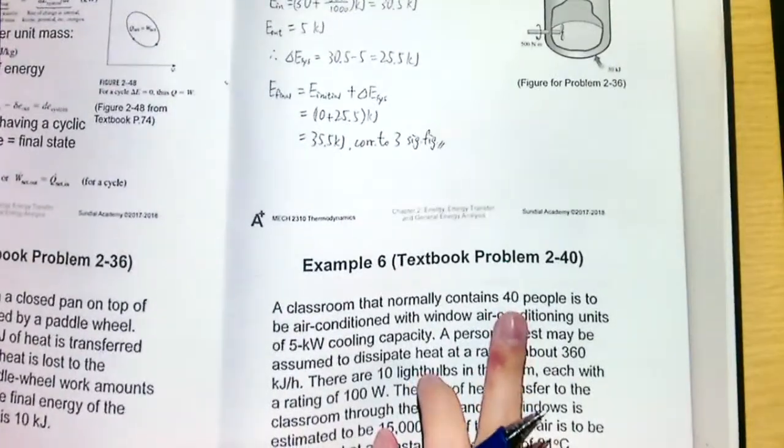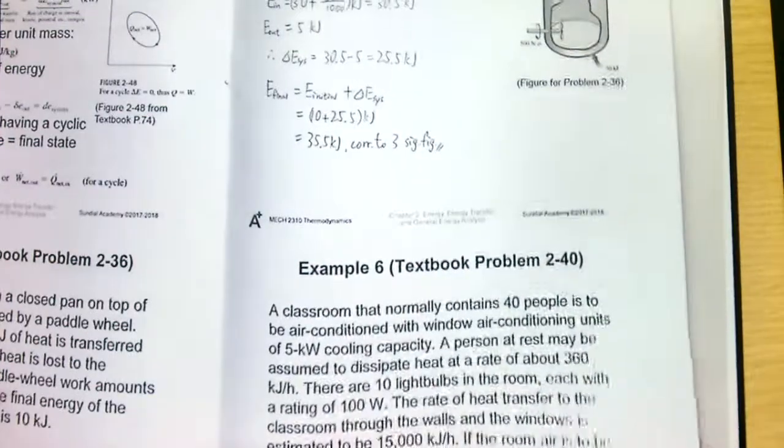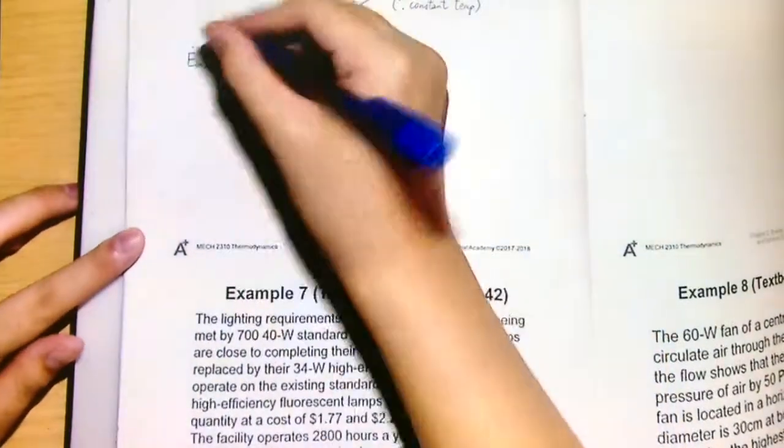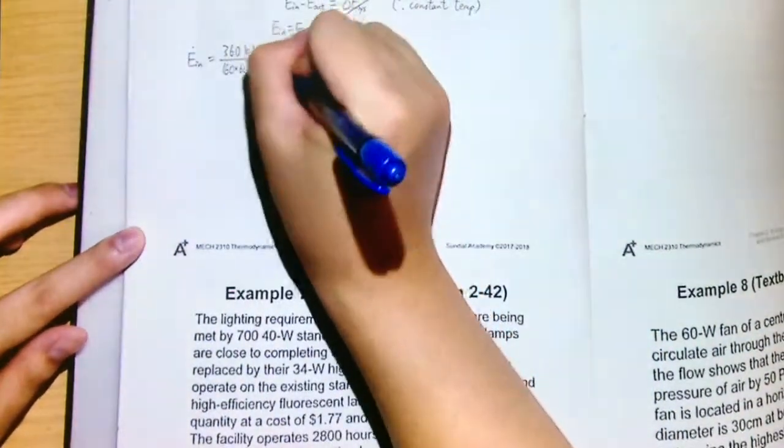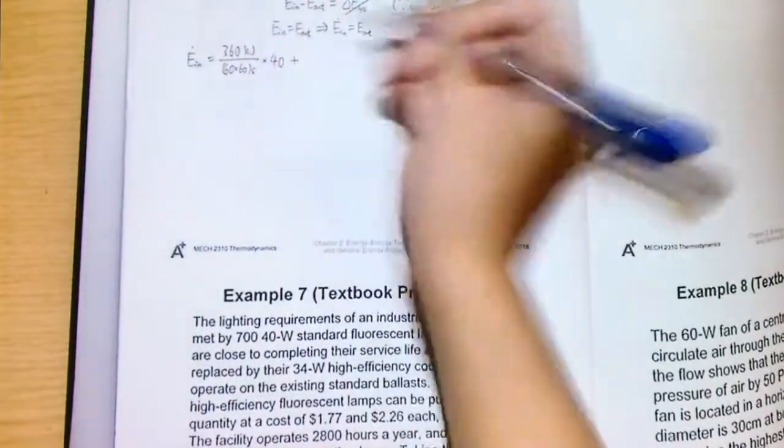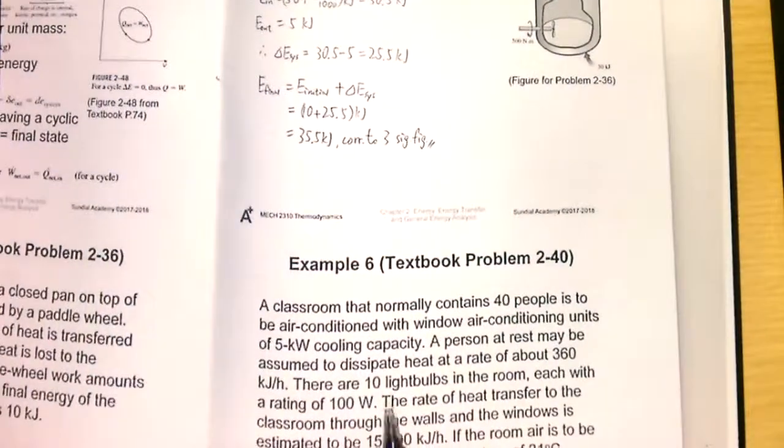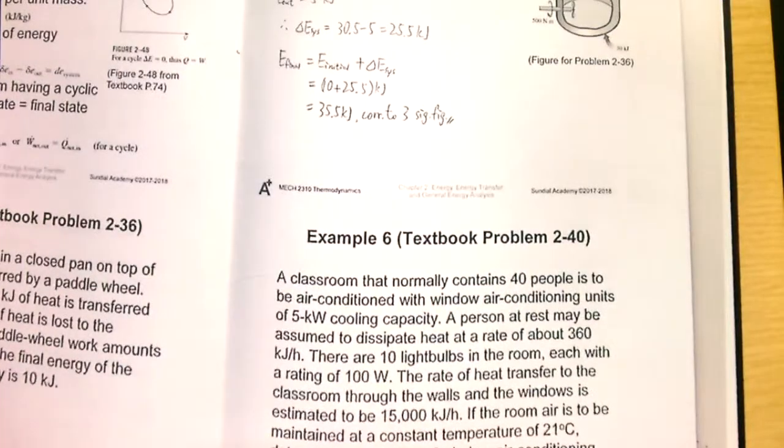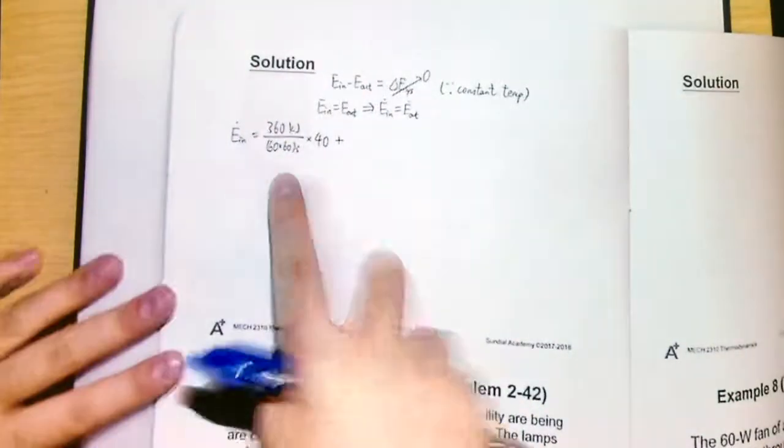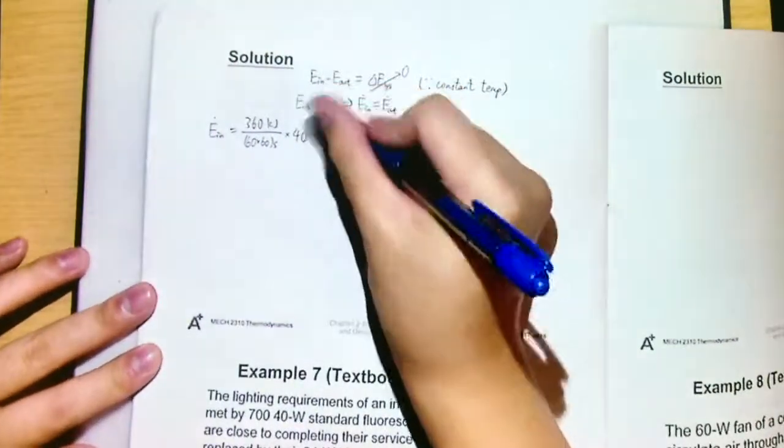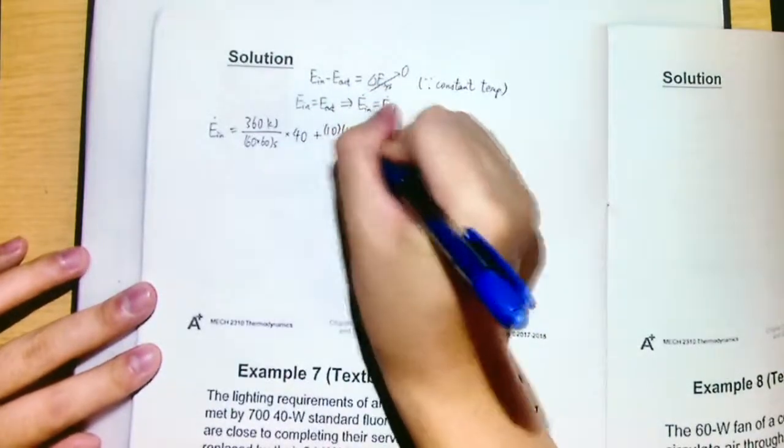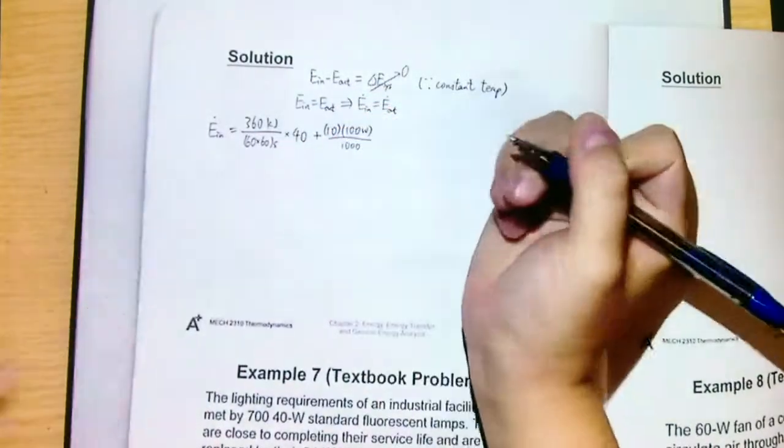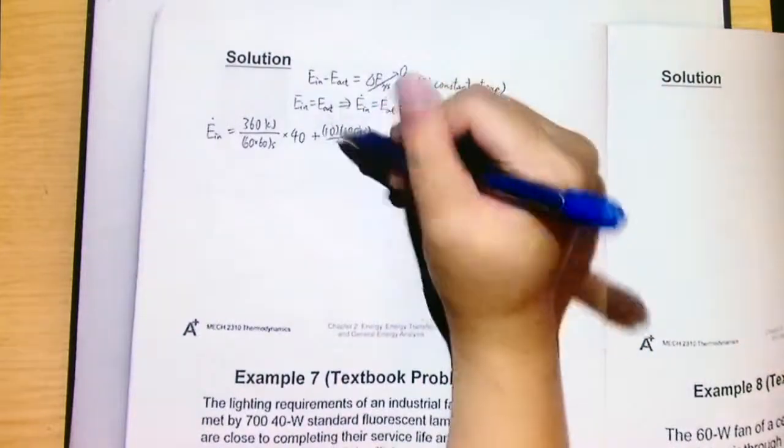We also have 10 light bulbs, and each of them will have 100 watts. But remember, because here we have used kilojoule, we need to convert this watt to kilowatt first. And this 10 is the number of light bulbs in this room.